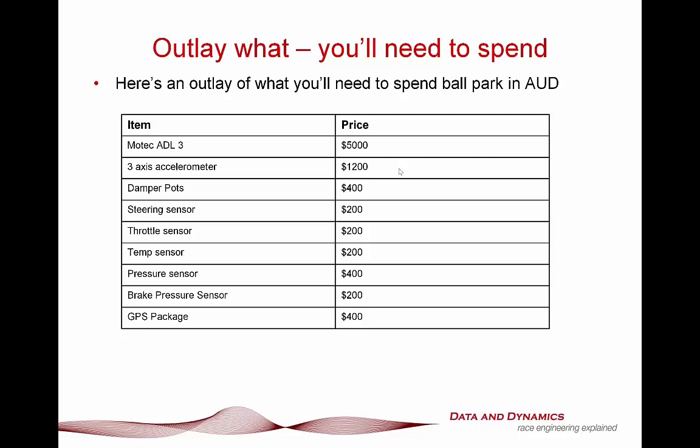A couple of observations: number one, it's ballpark, so don't take this as a definitive quote. But more importantly, particularly with things like damper pots, you can start simple and get more sophisticated later. You don't have to go for the expensive sensors up front. To those of you running in junior formula or club formula - it's tempting to look at a complete data acquisition suite and think it's all too expensive. The key thing is to start on the fundamentals with some basic sensors, then as the money comes in, you slowly upgrade those sensors.